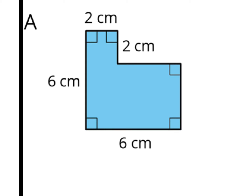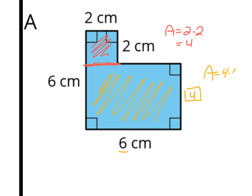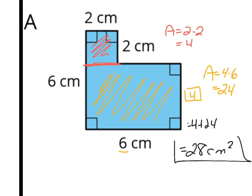Once again, a couple of different options. I'm going to decompose this into a 2 by 2 square. 2 times 2 gives an area of 4 for that shaded region. For the shaded region on the bottom, this dimension is 6, and the whole height was 6, but this piece is 2, leaving 4 for the remaining height. So the area of the bottom region is 4 times 6, which is 24. Adding 4 and 24 gives an area of 28 square centimeters.